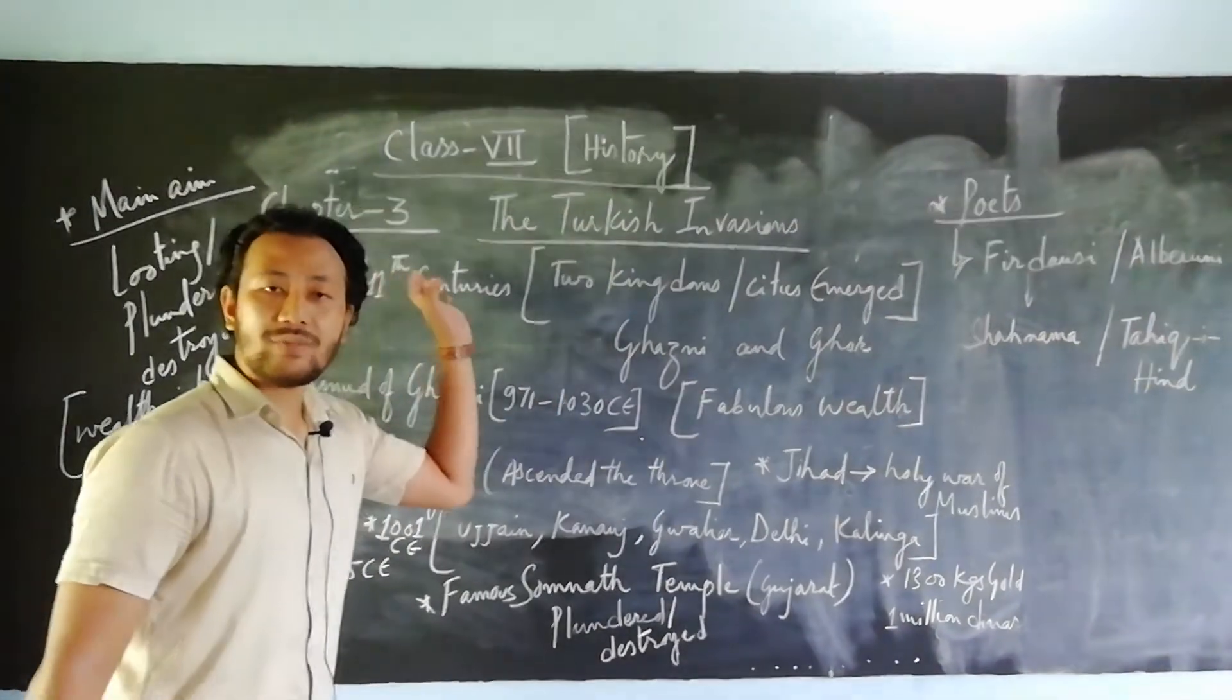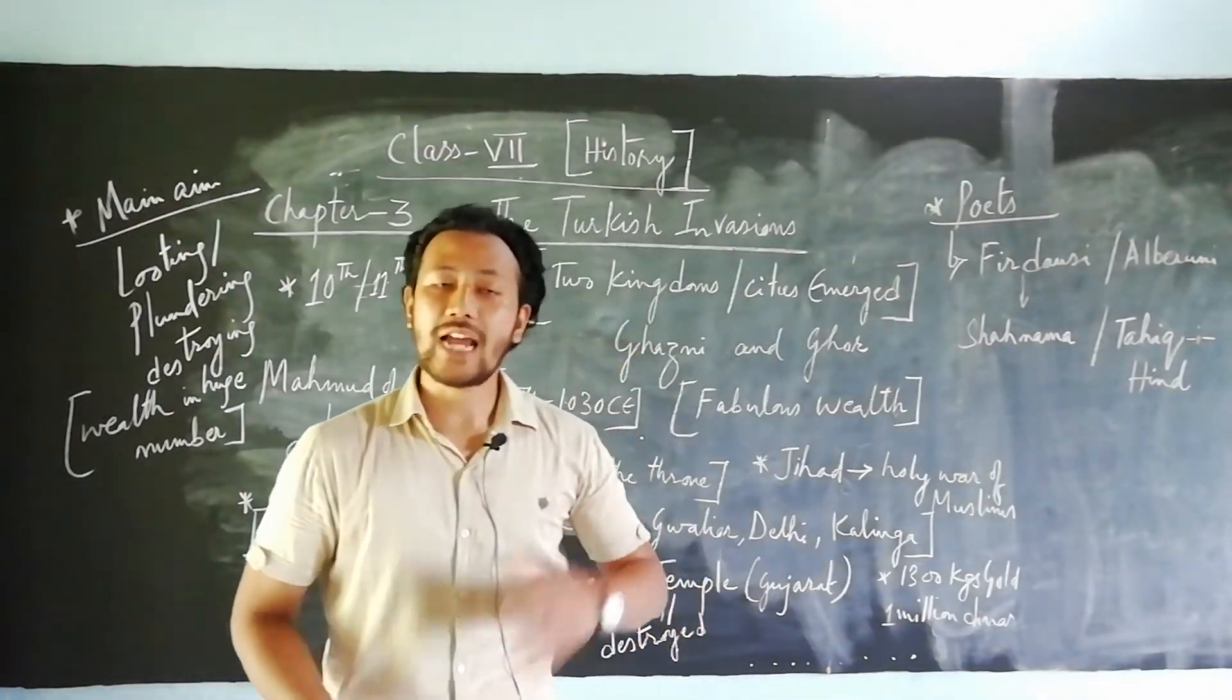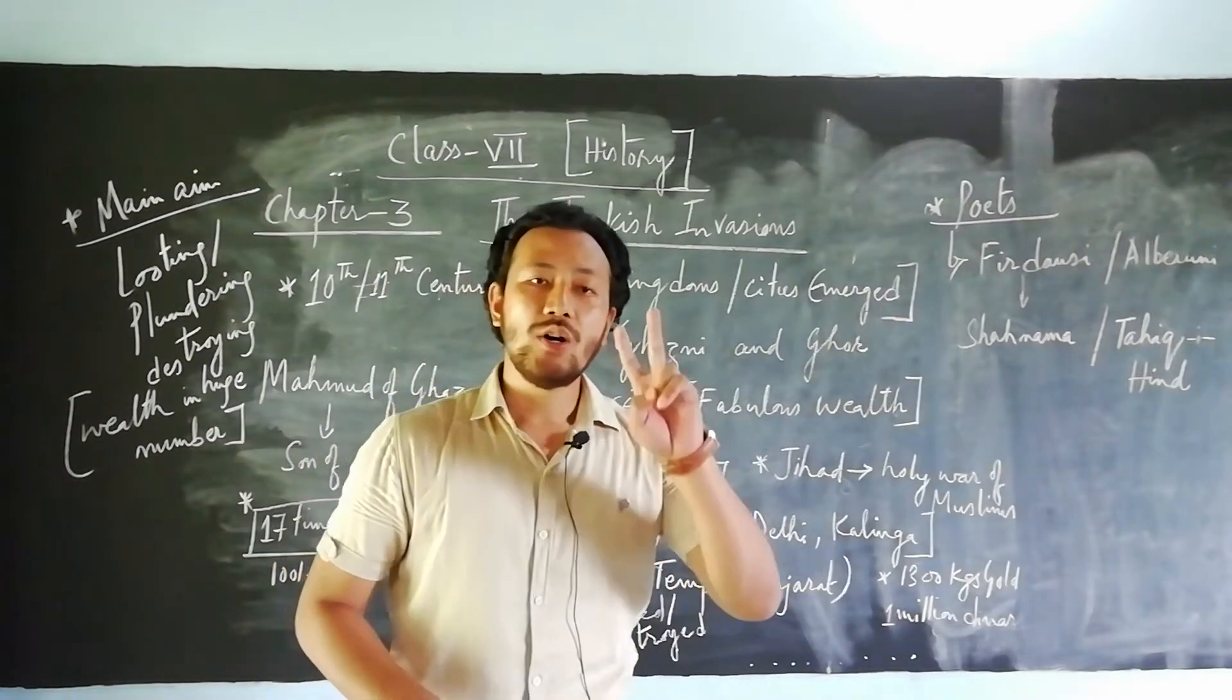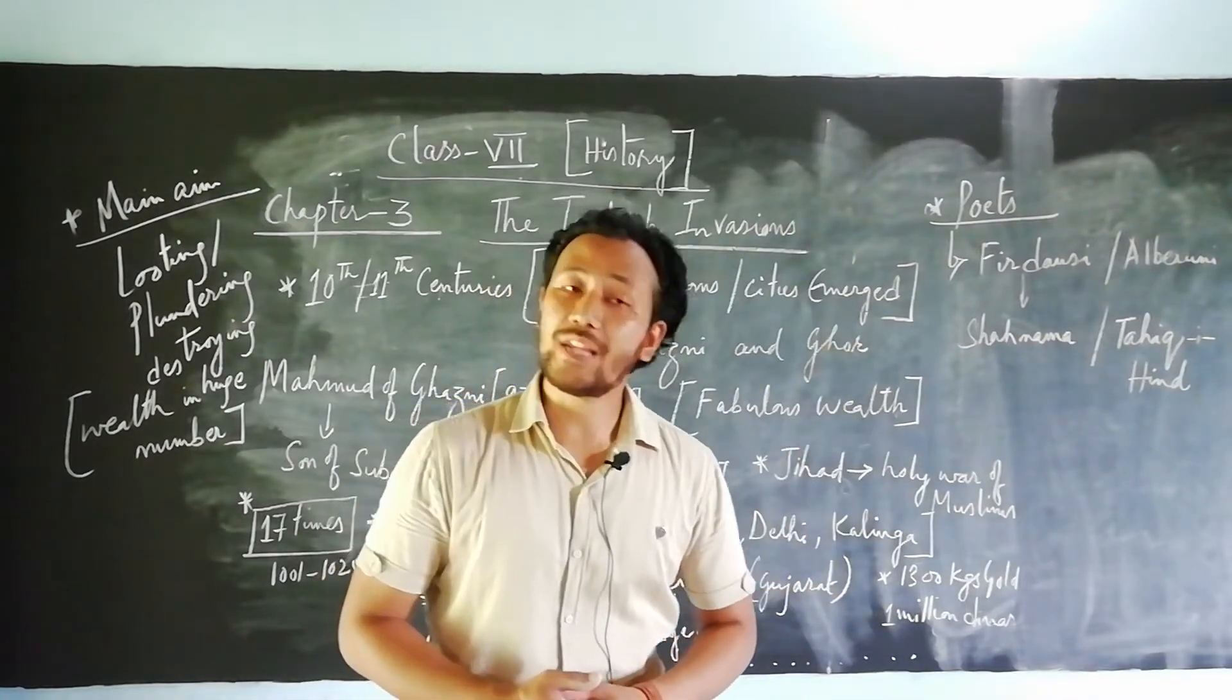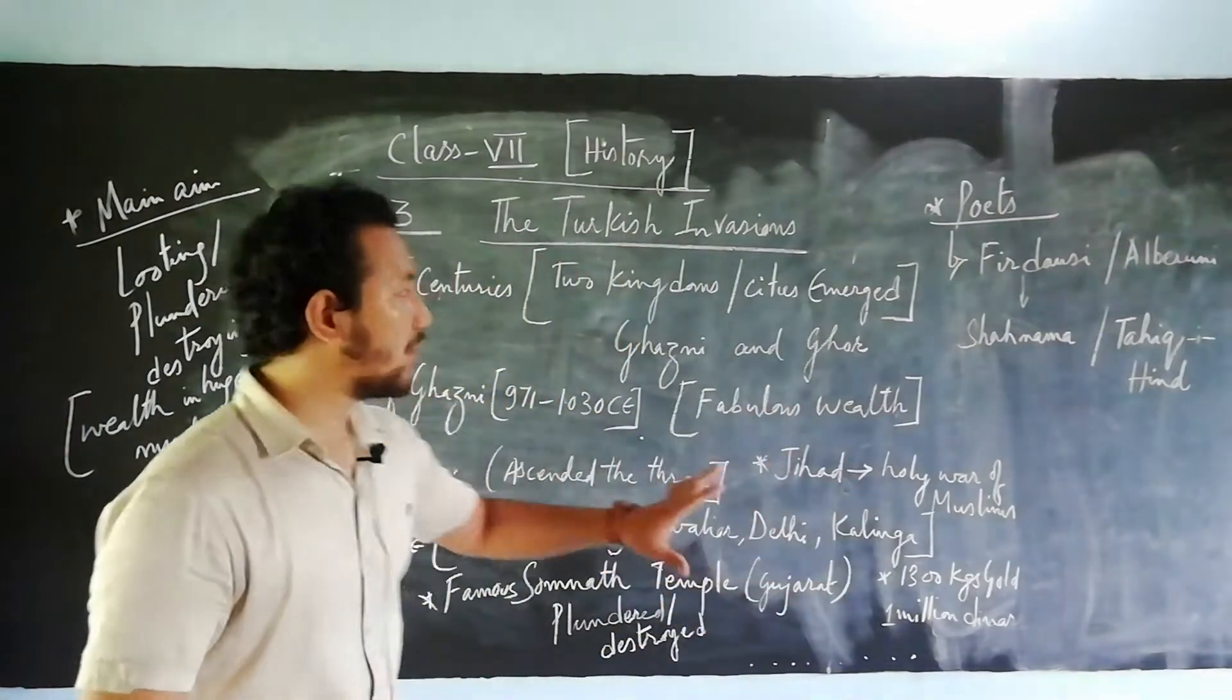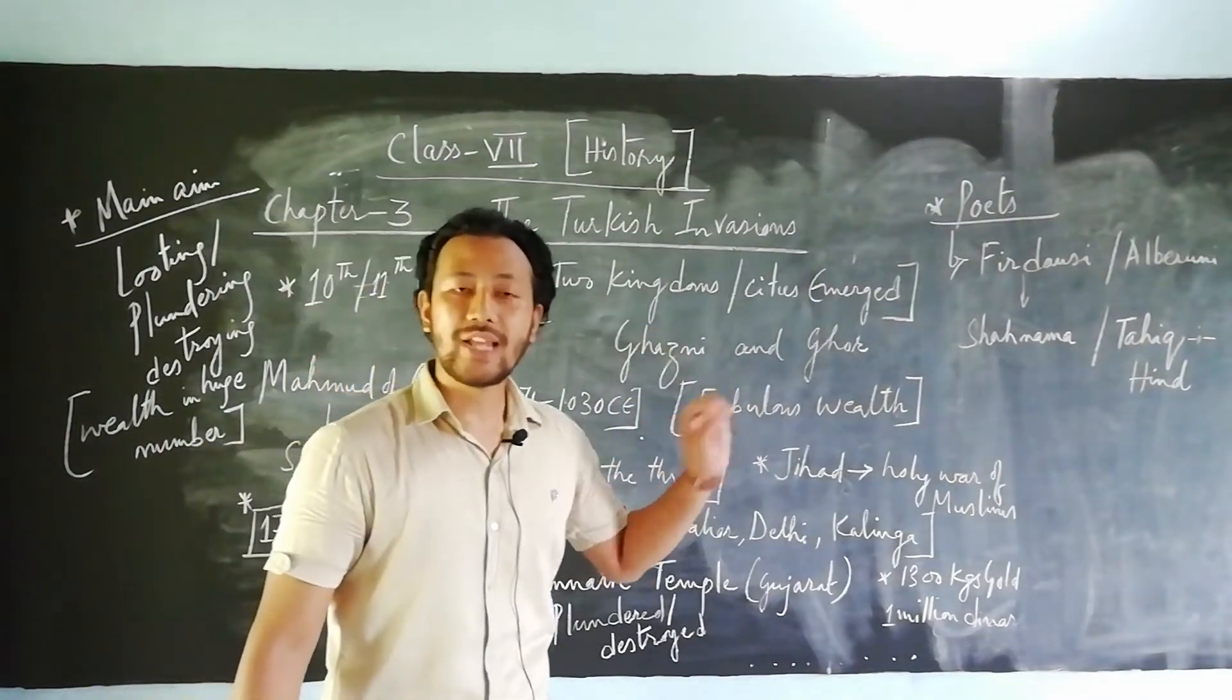we will be studying chapter number 3, known as the Turkish Invasion. If you have read the second chapter on Advent of Islam, we saw that there were two kingdoms which flourished after the 9th century onwards: Ghor and Ghazni. First talking about Ghazni, one of the most important kingdoms that flourished during the 9th to 10th century.